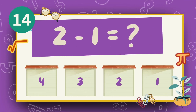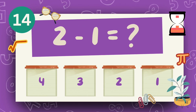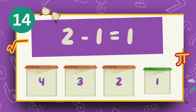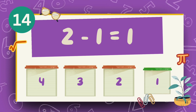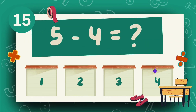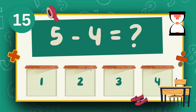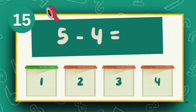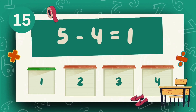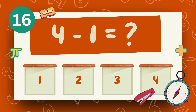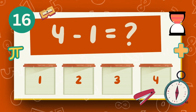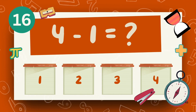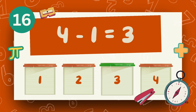What is 2 minus 1? The answer is 1. What is 5 minus 4? The answer is 1. What is 4 minus 1? The answer is 3.